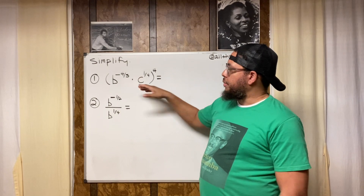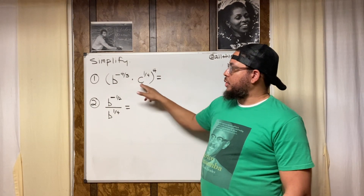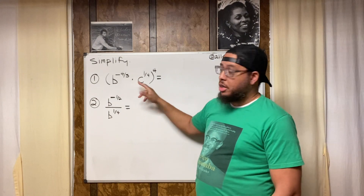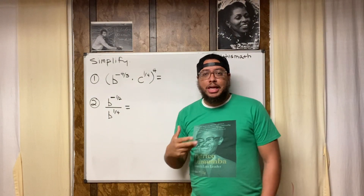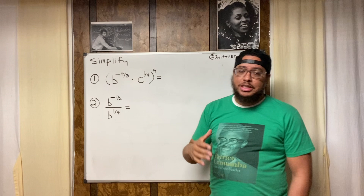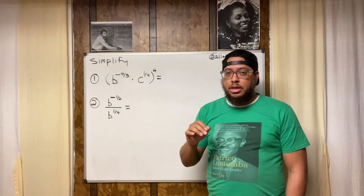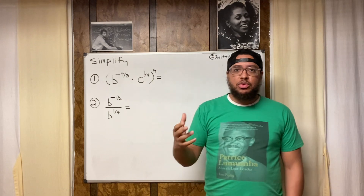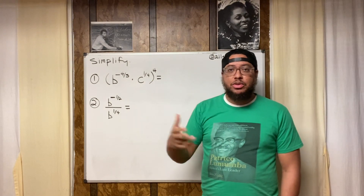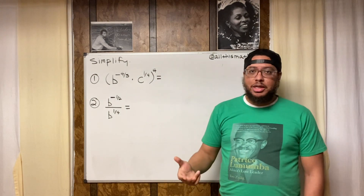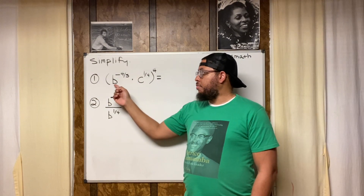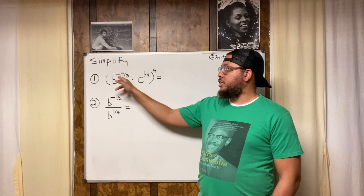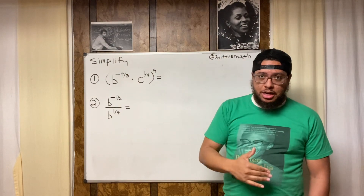Now, if these bases were the same — if both were b or both were c — we'd be able to use the multiplication property for exponents, where we would just add the exponents together. But look carefully: don't get confused and use the multiplication property when you're not allowed to. You cannot use it here because the bases are different. When the bases are the same, that's when you add the exponents together.